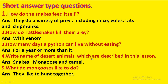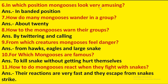Write the names of desert animals described in this lesson: snakes, mongoose, and camel. What do mongooses like to do? They like to hunt together. In which position do mongooses look very amusing? In the banded position. How many mongooses wander in a group? About 20. How do mongooses warn their group? By twittering and calling. From which creatures do mongooses feel danger? From hawks, eagles, and large snakes.